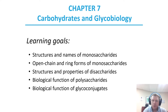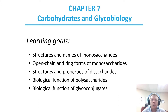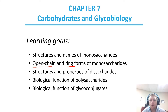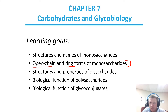Chapter 7: Carbohydrates and Glycobiology. Our learning goals are structures and names of the monosaccharides, open chain and ring forms — so linear versus cyclic forms — of monosaccharides, structures and properties of disaccharides, function of polysaccharides, and biological function of glycoconjugates. These first three parts are going to largely be what we look at in our first video.